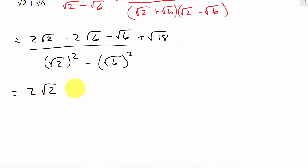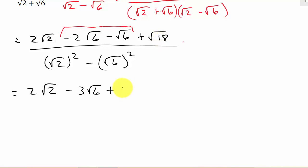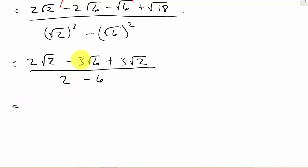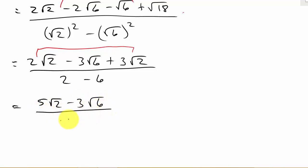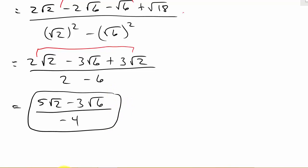So we have 2 square root of 2. Notice the like terms: negative 2 square root of 6 minus square root of 6 is minus 3 square root of 6. Plus square root of 18, which simplifies to 3 square root of 2 as we showed earlier. The denominator is 2 minus 6, which is negative 4. We also have like terms in the numerator: 2 square root of 2 plus 3 square root of 2 is 5 square root of 2. So our final answer is 5 square root of 2 minus 3 square root of 6 over negative 4. Nothing cancels, so this is our final answer.